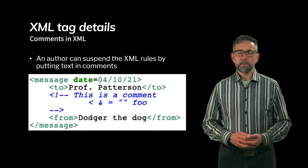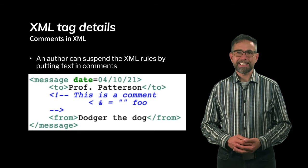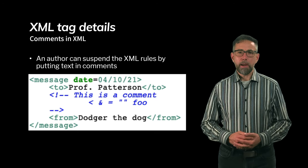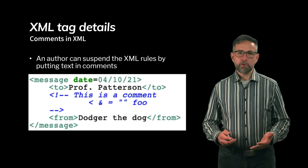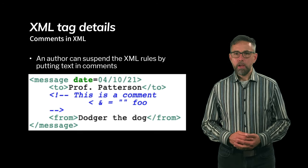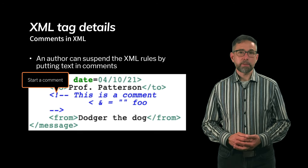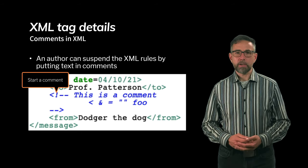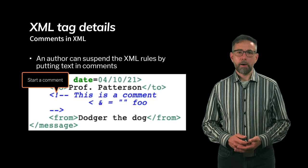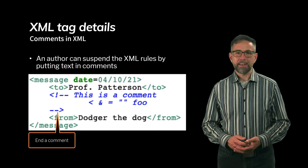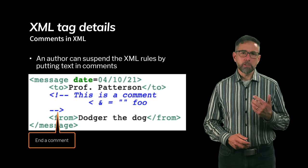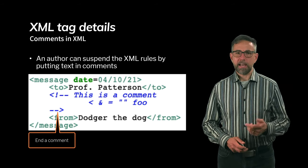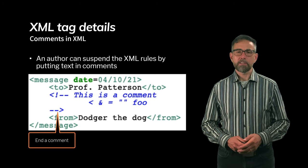XML can have comments, which allow an author to suspend the XML rules for a certain block of text. Comments are indicated in blue in this screenshot. You start a comment with a less-than sign, exclamation mark, and two dashes. Anything after this is treated as a comment until you reach the end marker, which is two dashes followed by a greater-than sign. It's kind of like a special-purpose tag, reminiscent of the first line of an XML document that uses the less-than question mark symbol.